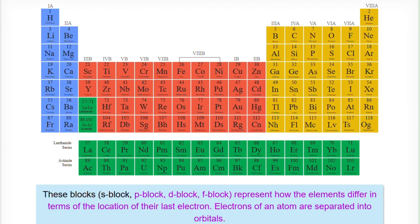These blocks represent how the elements differ in terms of the location of the last electron. Electrons of an atom are separated into orbitals.